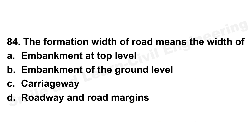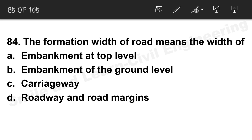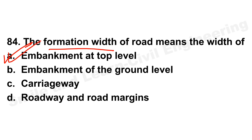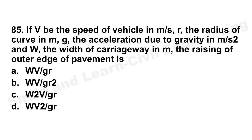Question 84: Formation width of a road means the width of the embankment at the top level. The correct answer reflects that formation width is measured at the top of the embankment.